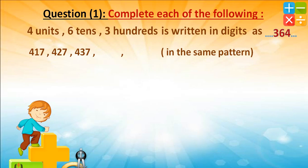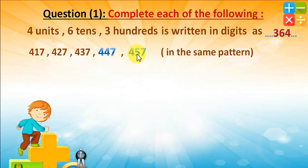Complete in the same pattern. The answer is 457. We add 10 each time. We had 1 ten, 2 tens, 3 tens, so next is 4 tens, then 5 tens — but the units and hundreds stay the same.